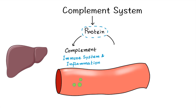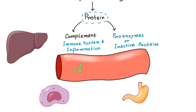Those proteins are present all the time in the blood, but they are pro-enzymes or inactive proteins. Another interesting thing about complement proteins is that they are not only produced by the liver — they are also produced by macrophages and GIT mucosa.